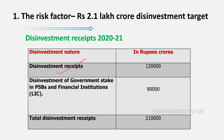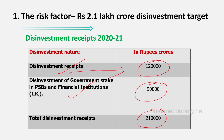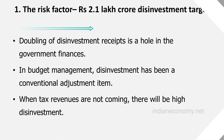Looking at the detailed statement of next year's disinvestment target, the ₹2,10,000 crore figure is divided into two components. The first is disinvestment receipts of ₹1,20,000 crore, which is expected to come from strategic disinvestment, exchange-traded funds, IPOs, etc. The second component is ₹90,000 crore from disinvestment of government stake in public sector banks and financial institutions, including LIC. So ₹90,000 plus ₹1,20,000 crore equals ₹2,10,000 crore.